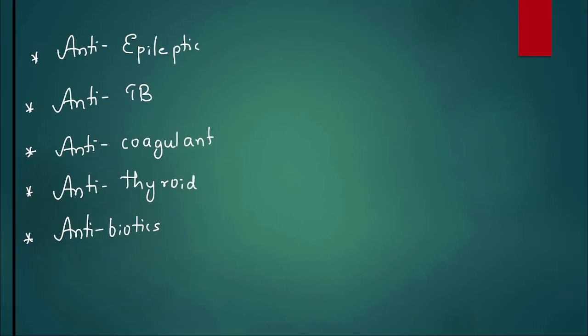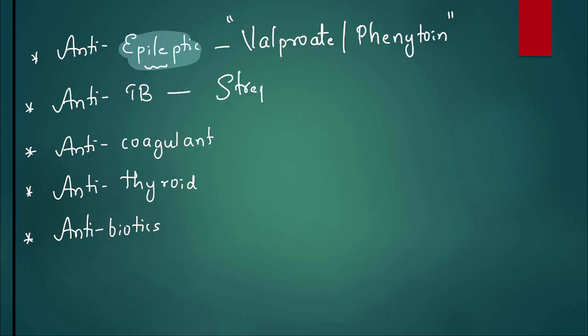The question we're discussing is what antihypertensives are contraindicated: ACE inhibitors and ARBs. Which anti-epileptic drug is contraindicated in pregnant women? Valproate, because of neural tube defect, and phenytoin because it causes fetal hydantoin syndrome. Anti-TB drug contraindicated is streptomycin or any aminoglycosides because they are known for ototoxicity and can damage the ear of the fetus.